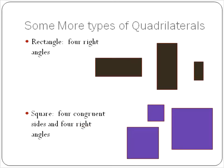Let's look at two more types of quadrilaterals. A rectangle has four right angles or four 90-degree angles. So we could say that a square is a type of rectangle because a rectangle simply has four right angles. A square has four right angles, but it's a special type of rectangle with four congruent sides.